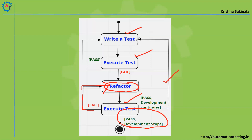The iteration continues until your code passes the test cases, meaning it meets your requirement. This is called test driven development — simply: write the test, test the code, if it does not pass refactor the code, execute the test again, and repeat until it passes.